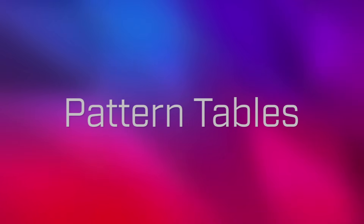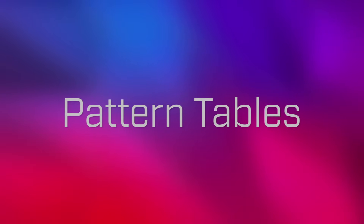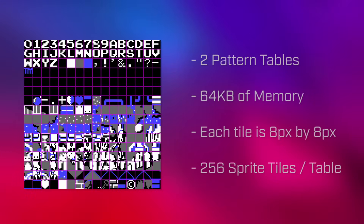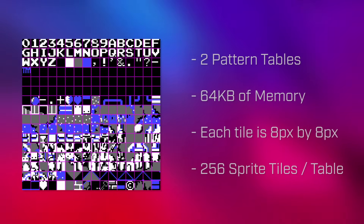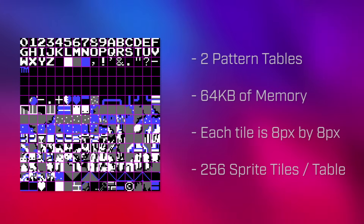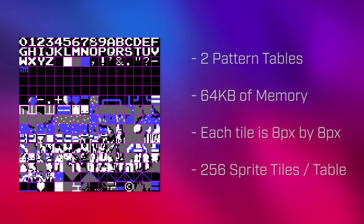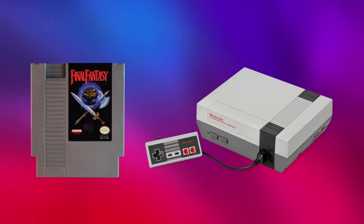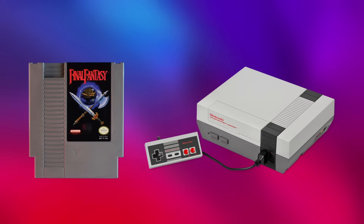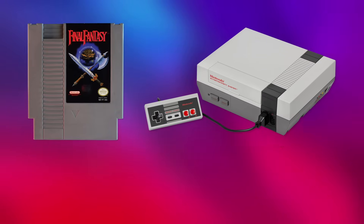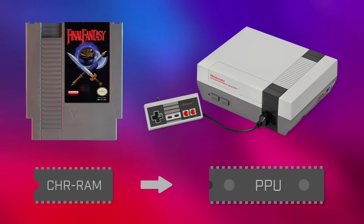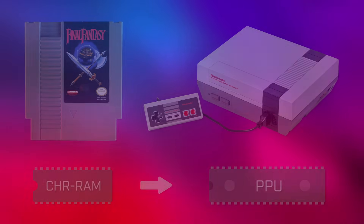The first of the PPU sections contains the pattern tables, which hold the raw sprite image data for a game. There are two pattern tables — the left table and the right table — each with 64 kilobytes of memory, together holding up to 256 8-pixel by 8-pixel tiles. This section of memory is usually mapped directly to a cartridge's Character-ROM or Character-RAM chip.